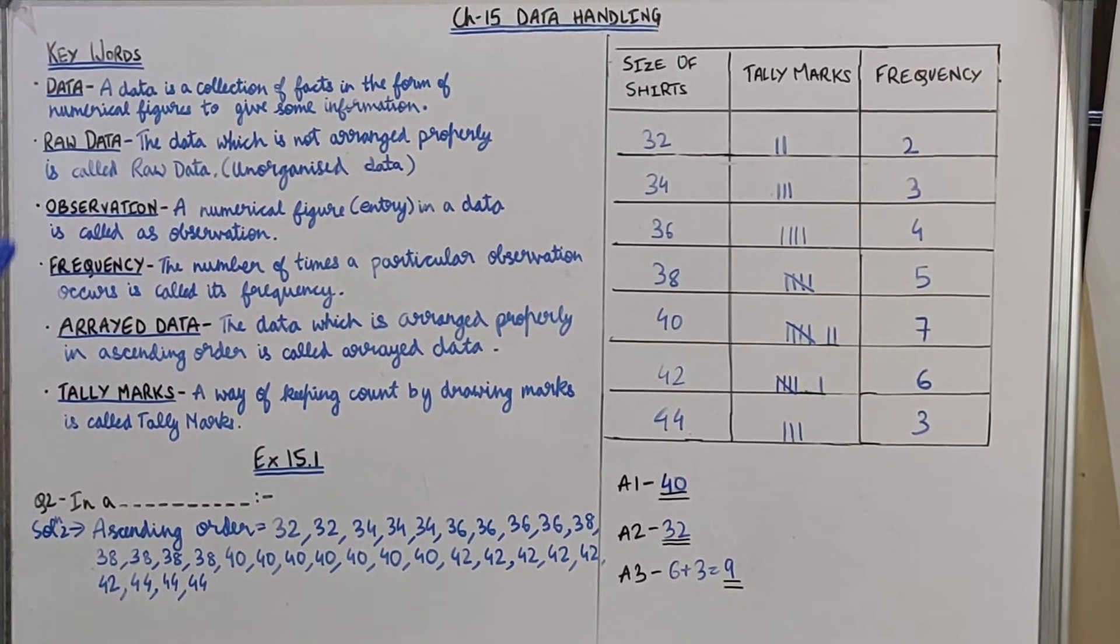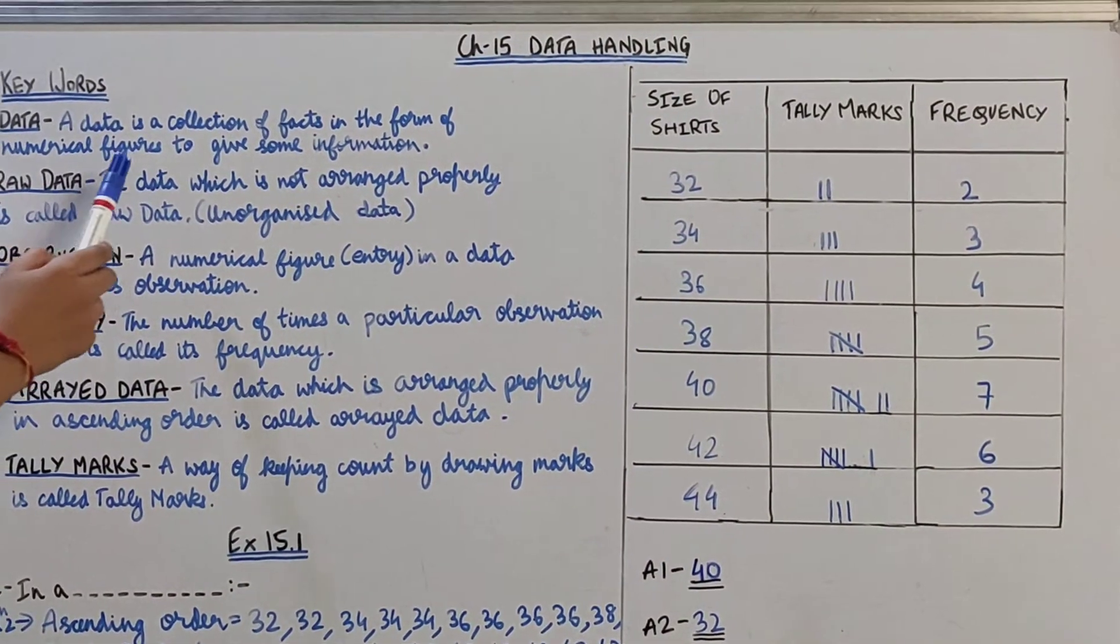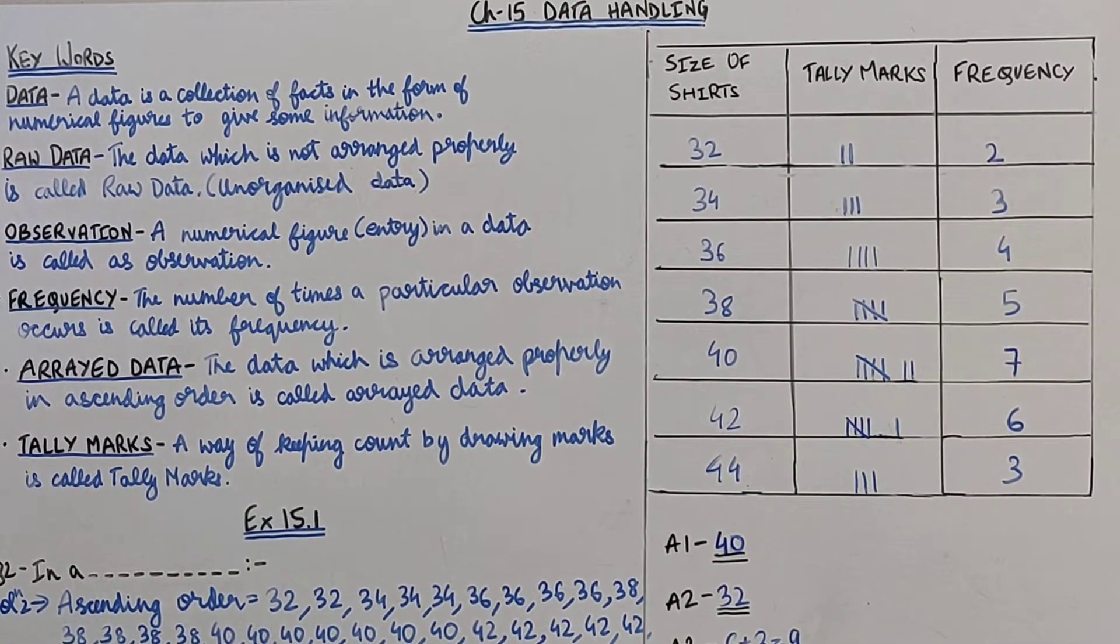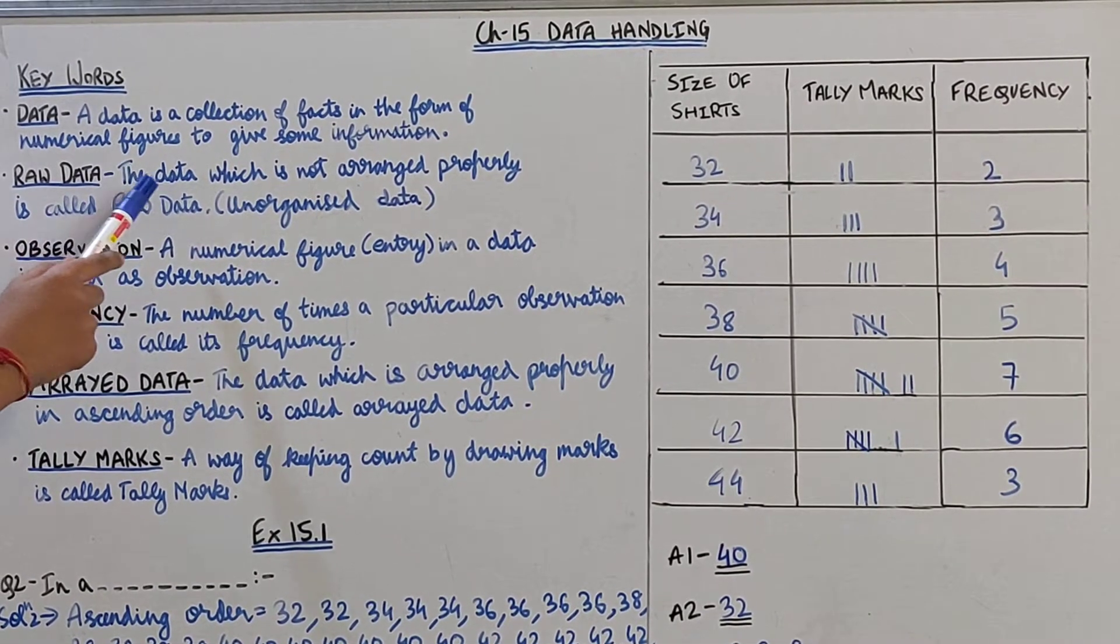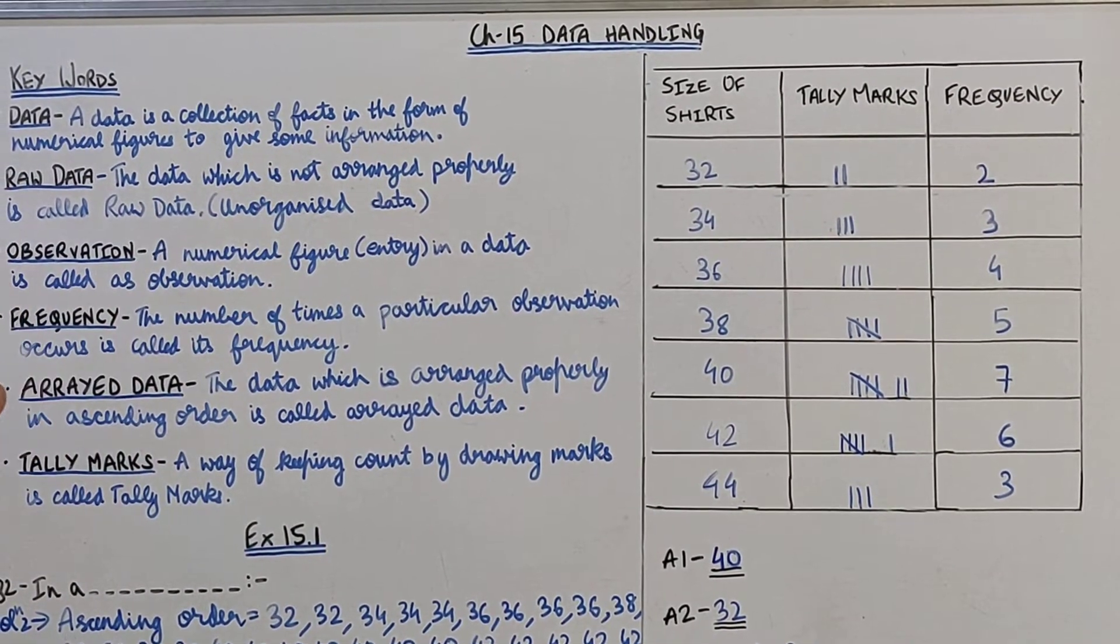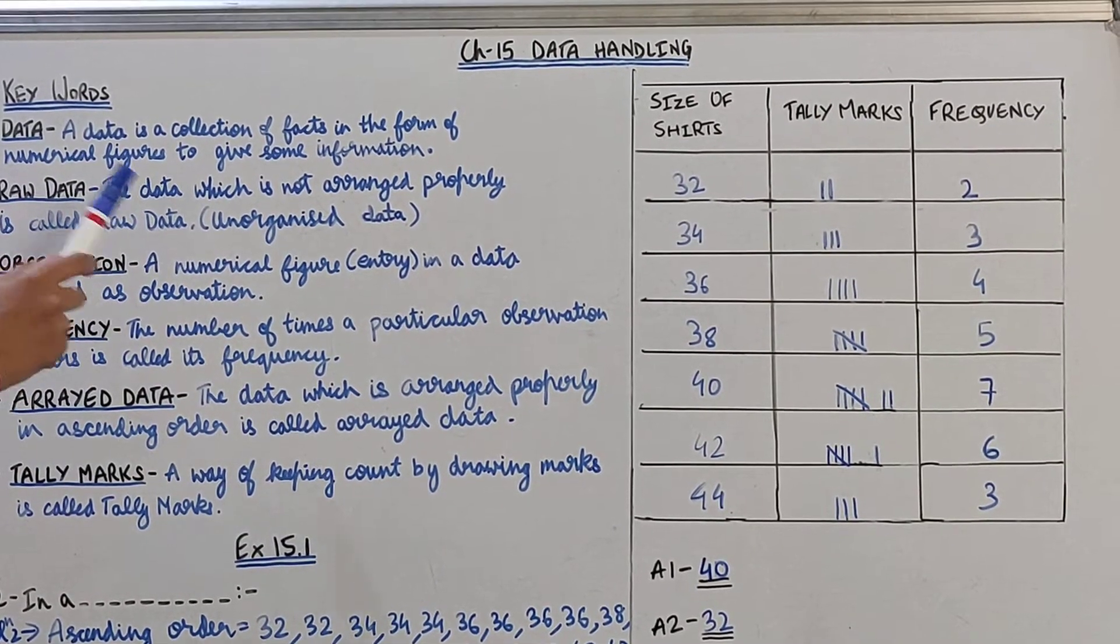First is data. Data is a collection of facts in the form of numerical figures or numbers to give some information. Then raw data. The data which is not arranged properly, or in short you can say unorganized data, is called raw data.